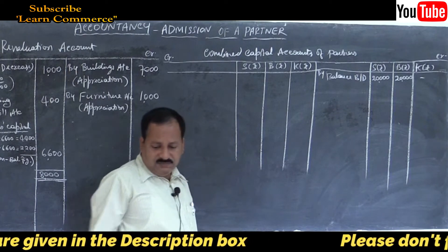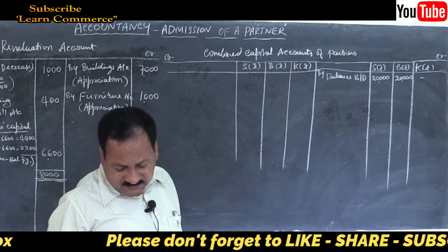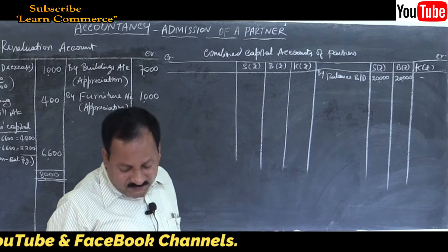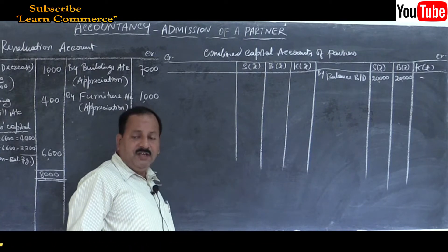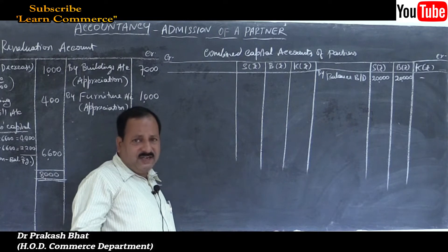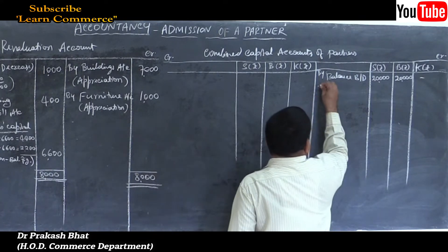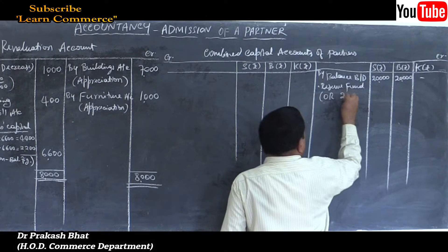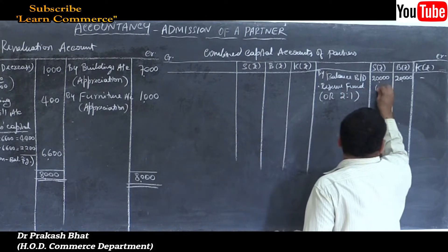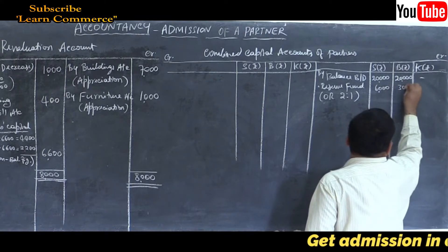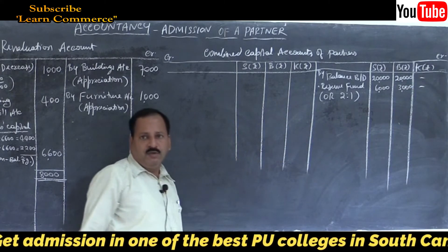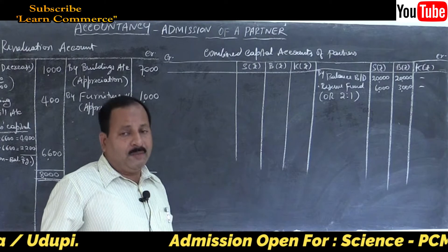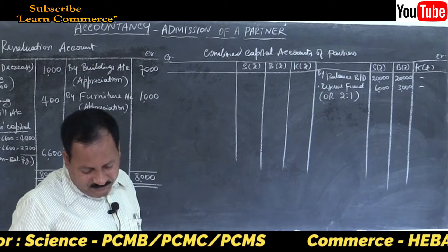There is a reserve fund of Rs. 9,000 which must be distributed among the old partners in their old ratio of 2:1. So 9,000 × 2/3 = Rs. 6,000 for Sharath and 9,000 × 1/3 = Rs. 3,000 for Bharath. Credit 'by reserve fund' in their capital accounts.